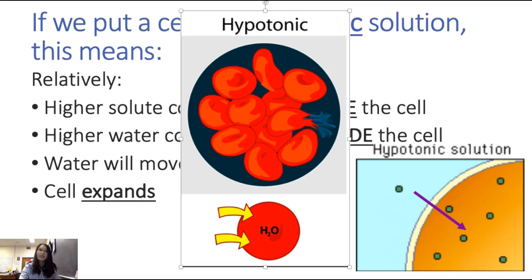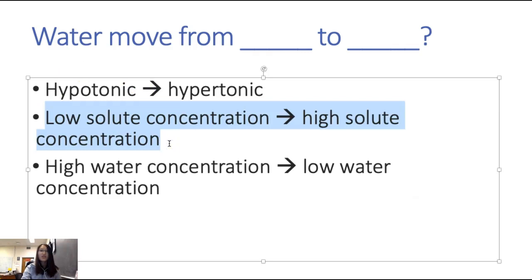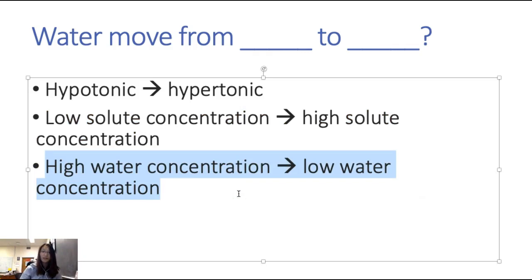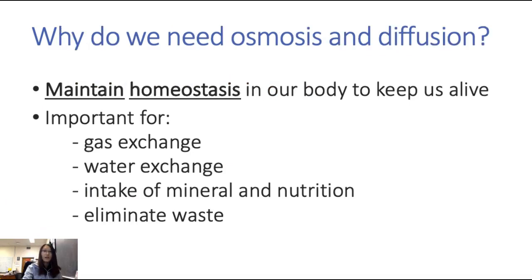Summary: water moves from low solute concentration to high solute concentration, because that's the same as moving from high water concentration to low water concentration. It's always high to low. Water moves from an area that's hypotonic — low solute, high water — to hypertonic. We need osmosis and diffusion to maintain homeostasis for our body so we can stay alive.